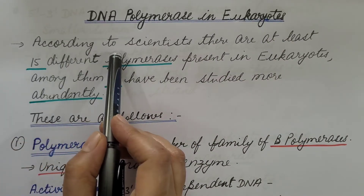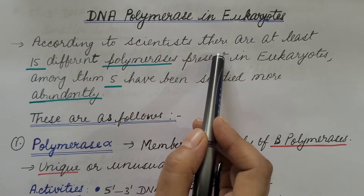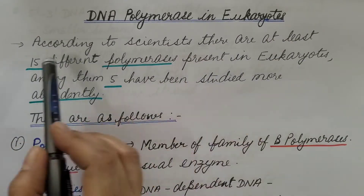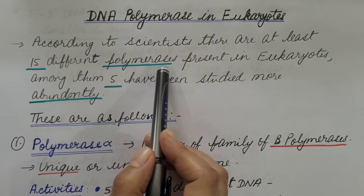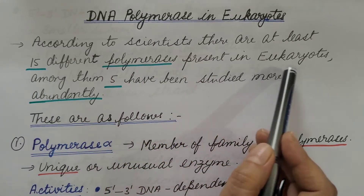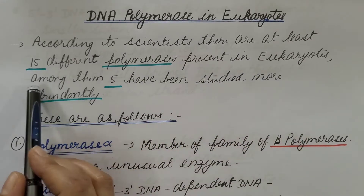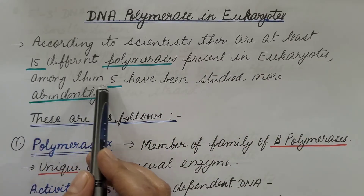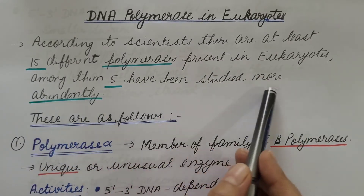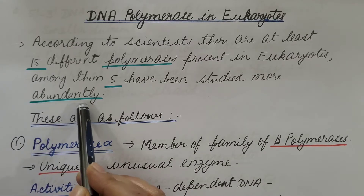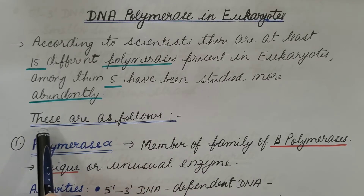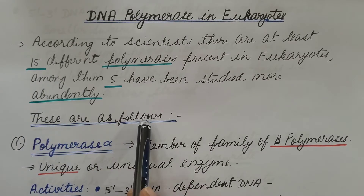According to scientists, there are at least 15 different polymerases present in eukaryotes. Among them, 5 have been studied more abundantly. These are as follows.